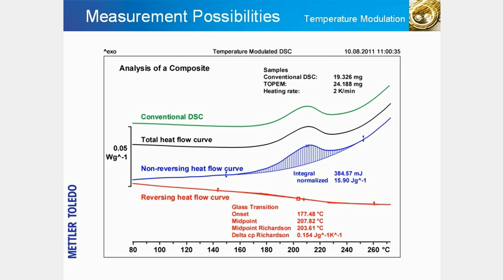The experiment was therefore repeated using TOPEM, a DSC temperature modulation technique. The glass transition is now clearly visible at about 210 degrees Celsius in the red reversing heat flow curve. The small peak in the blue non-reversing heat flow curve is therefore due to the post-curing reaction. The glass transition temperature and the reaction peak can be used for quality control.